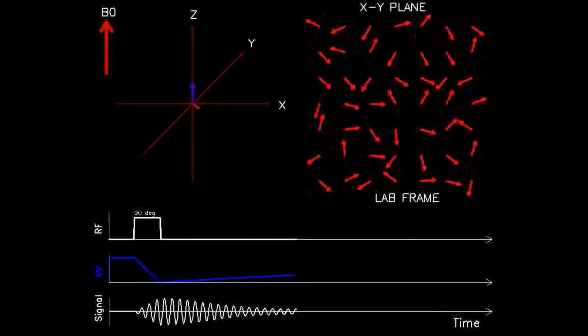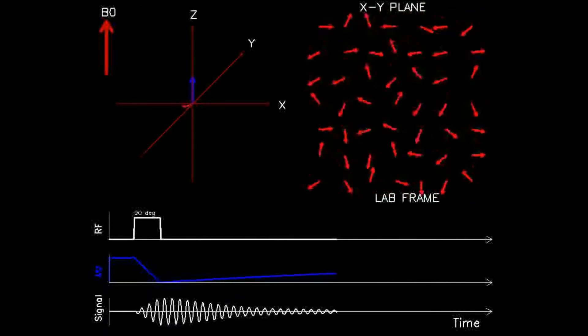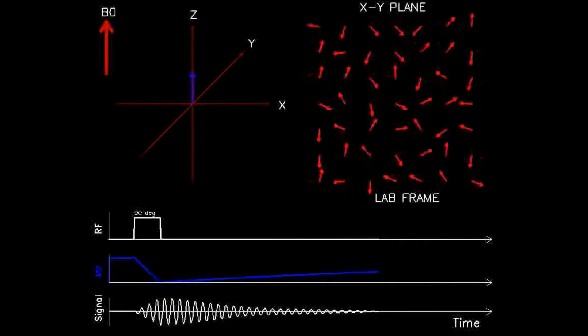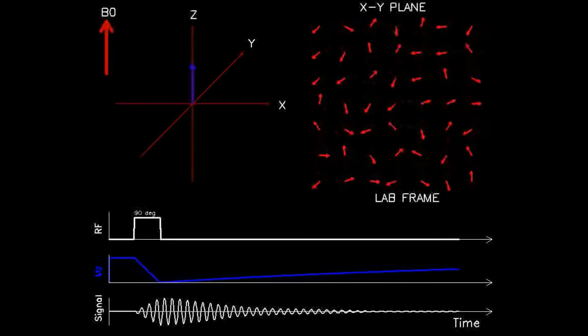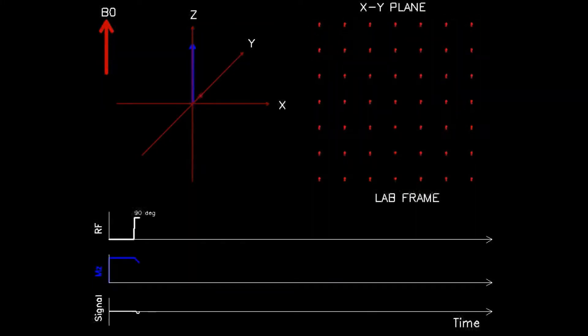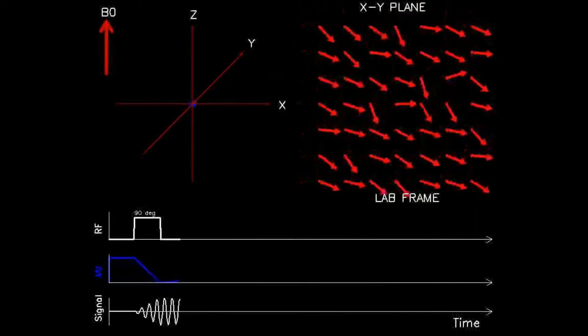Notice that over time, there is a recovery of the blue arrow pointing in the z-axis direction. There is also continued decay in the magnitude of the rotating red arrow in the left upper panel that represents the sum vector of the 49 red arrows in the right upper panel.